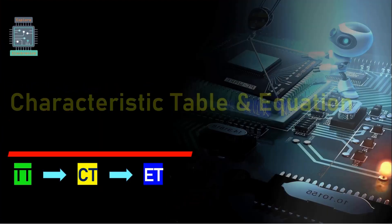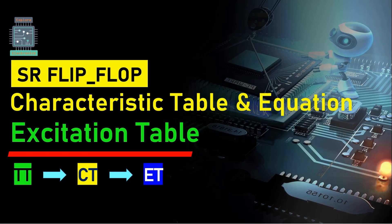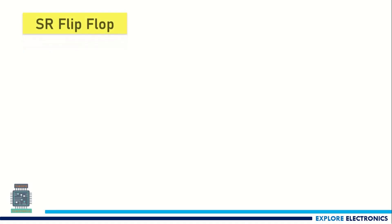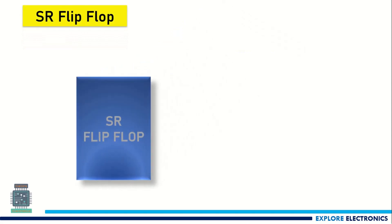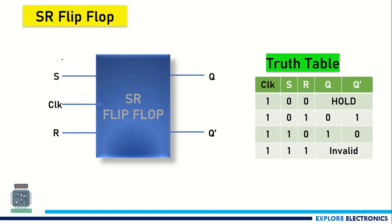Welcome to this video on characteristic table, equation, and excitation table for SR flip-flop. SR flip-flop has inputs S and R, and outputs Q and Q bar. It also has a clock signal, and depending on the clock signal and S and R, we get Q and Q bar as outputs. The clock can be considered as a positive edge, meaning at the positive edge of the clock, the SR flip-flop gives the output.